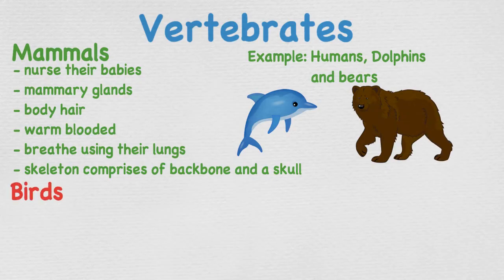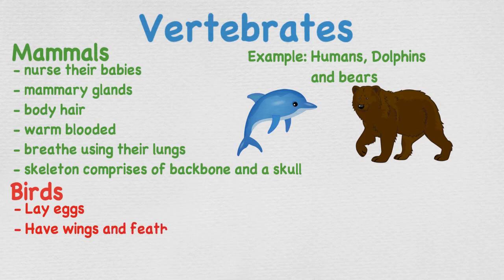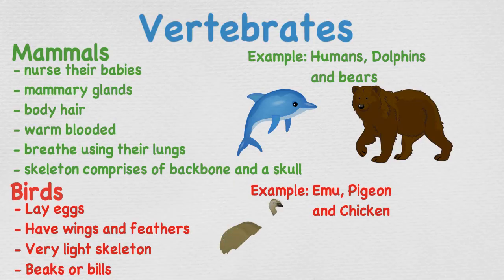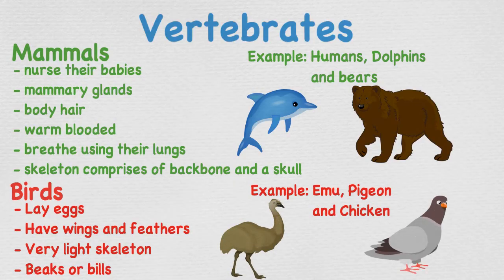Birds are oviparous, meaning they lay eggs which can range anywhere from 1 to 17. They have wings, feathers, a very light skeleton, and instead of teeth they have horn-like beaks or bills. Examples include emus, pigeons, and chickens.